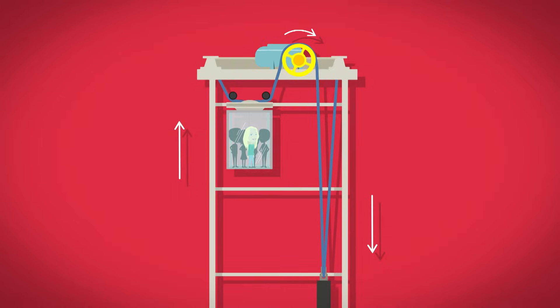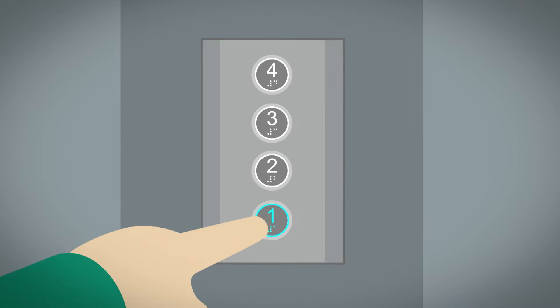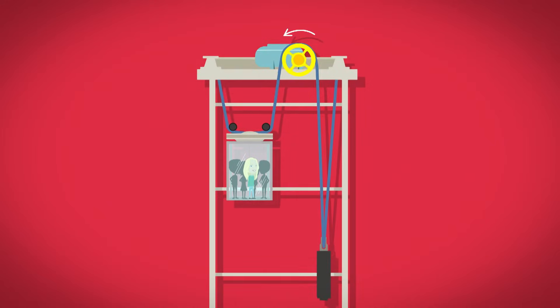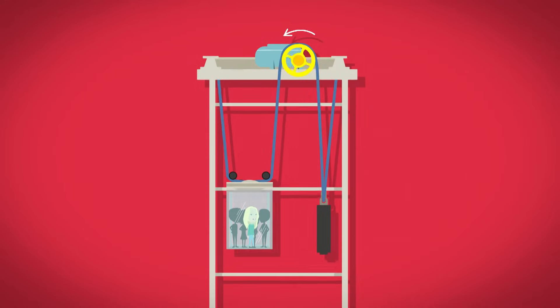When we want the lift to go down, the sheave wheel moves in the opposite direction. The steel ropes pull the counterweight up and the lift travels downwards, to the bottom.